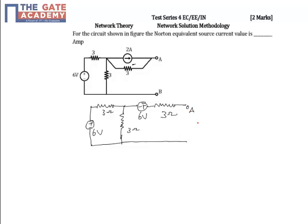This is A and this is B. The question here is to find the Norton equivalent source current, that will be equal to ISE. Now to determine ISE, we will be making use of mesh analysis.